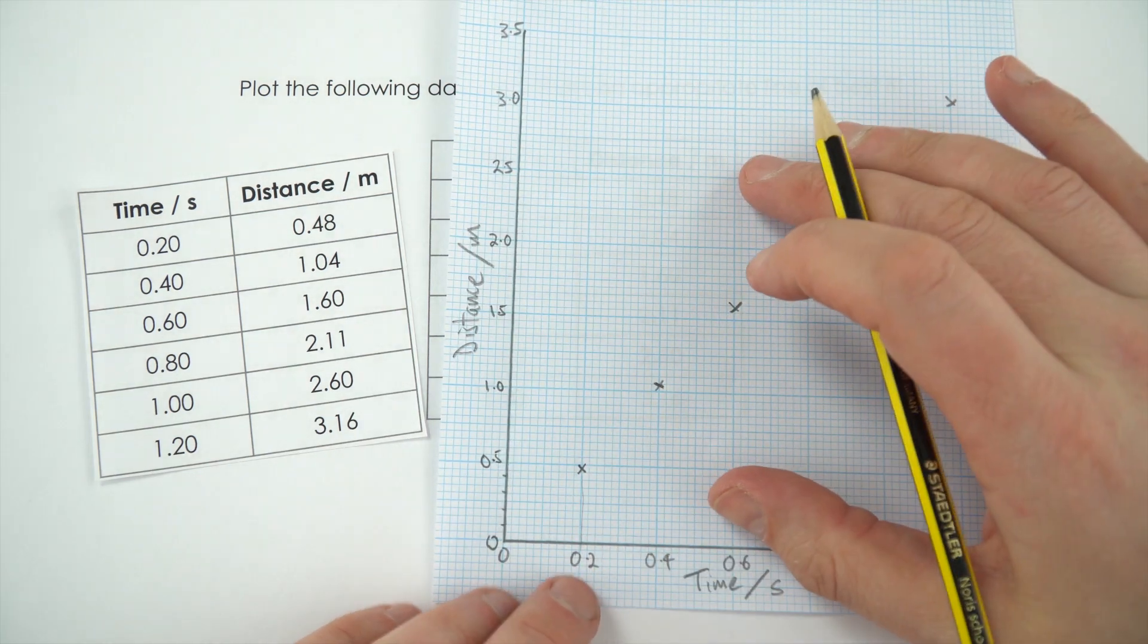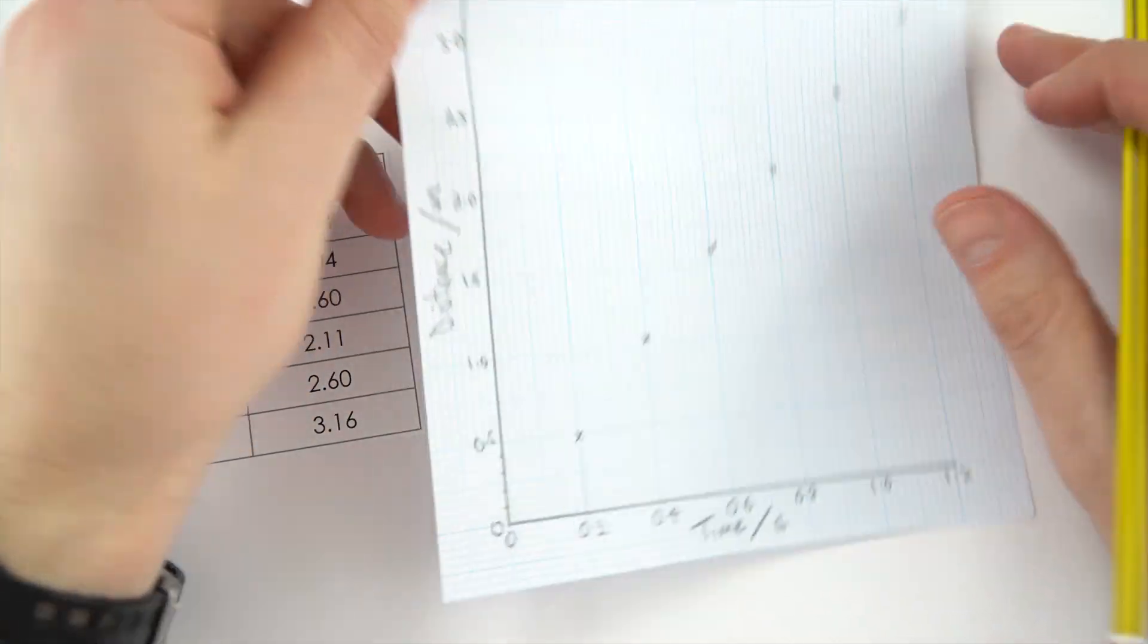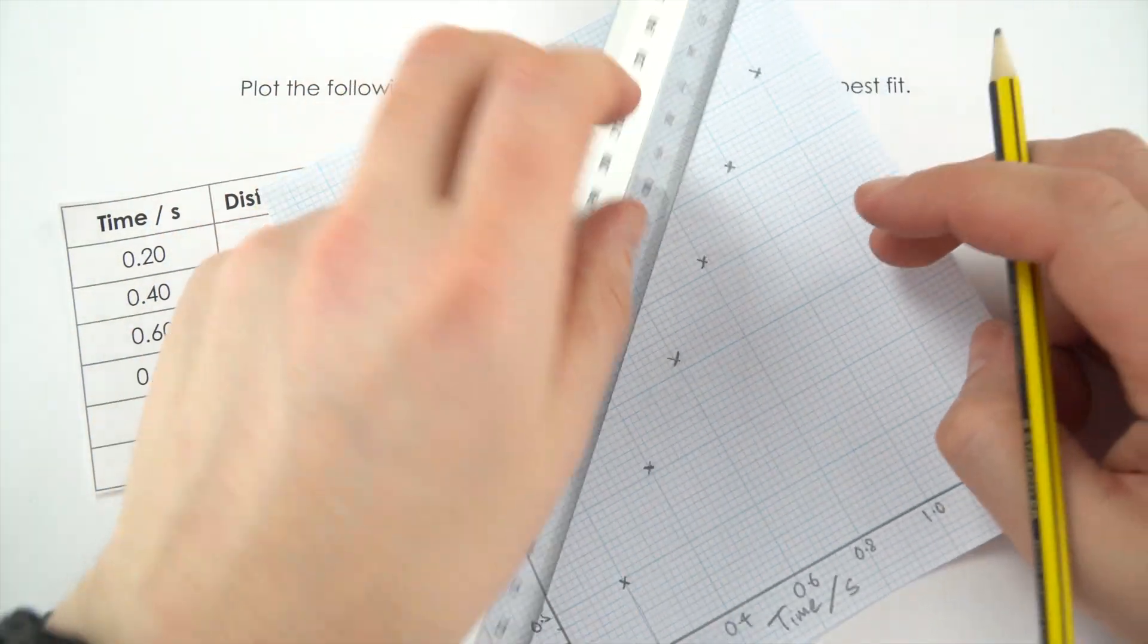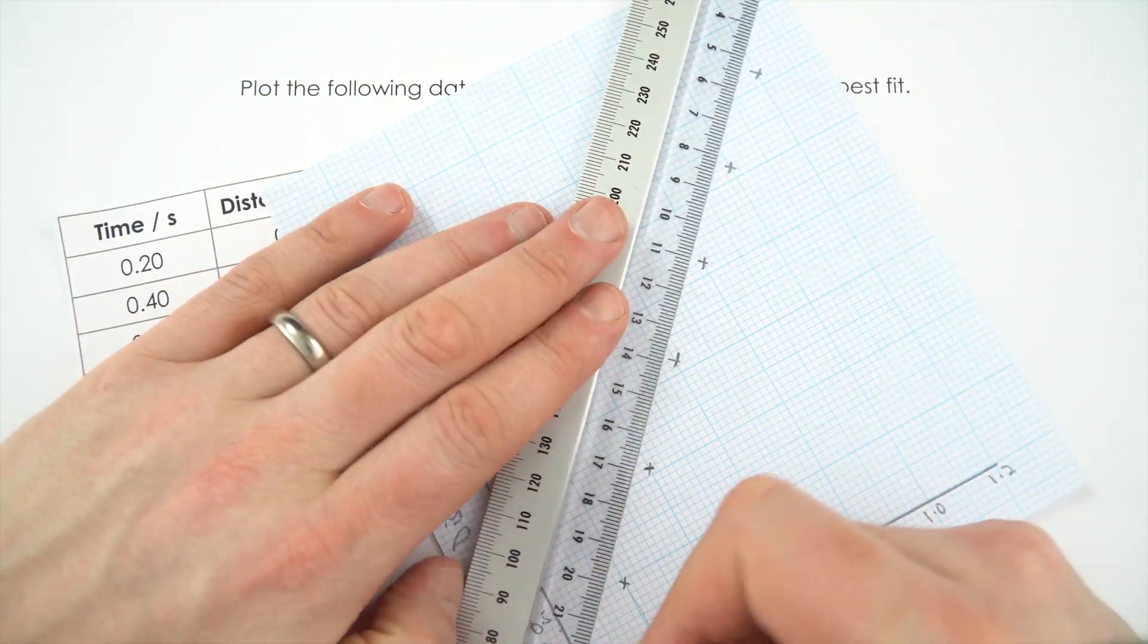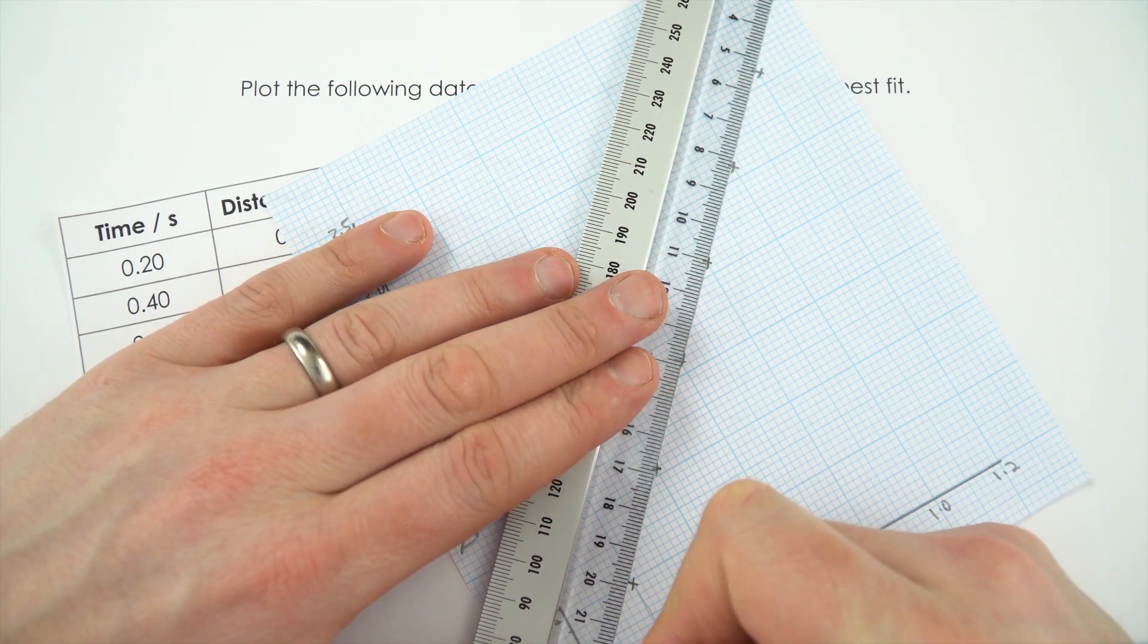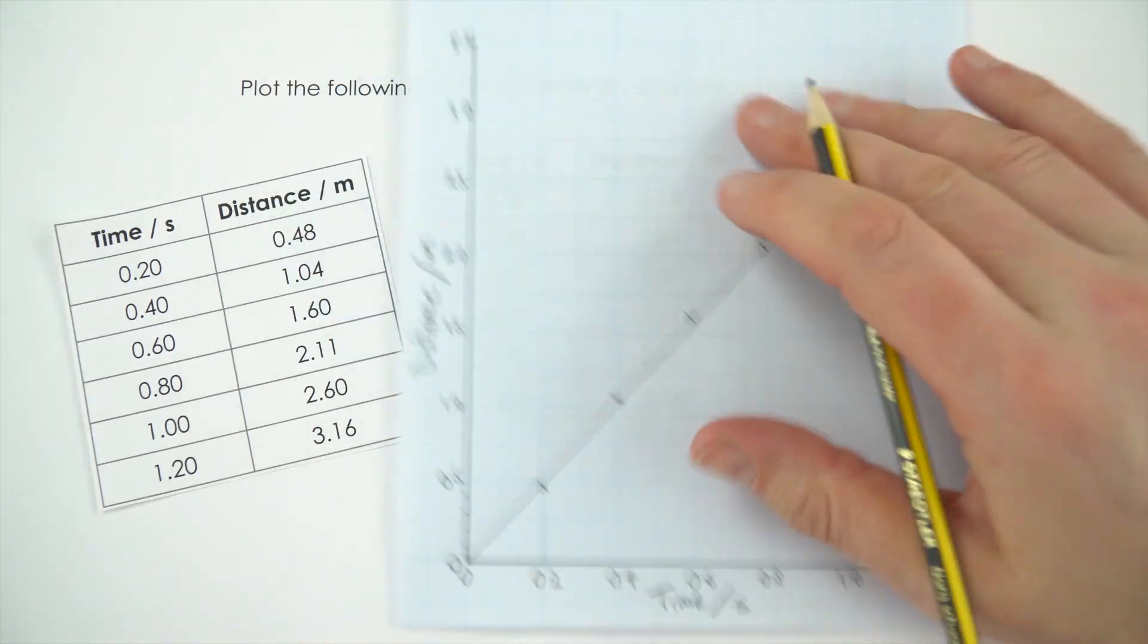When it comes to putting in a line of best fit, this one here, to me, definitely looks like a nice straight line using a ruler. This one also goes through the origin, so I'm going to get my 30cm ruler and line everything up so that I've got the same amount of points above and below the line. And that's it.